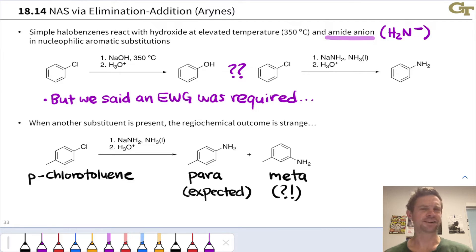But we also get the meta product, and this seems bizarre. This looks like substitution not at the carbon bearing the leaving group, but at one of the meta positions next door to that carbon. This cannot involve just addition followed by elimination, since something's going on at those positions next to the carbon bearing the chlorine.